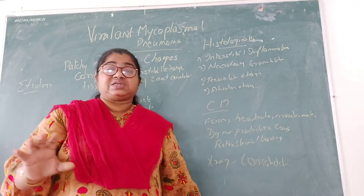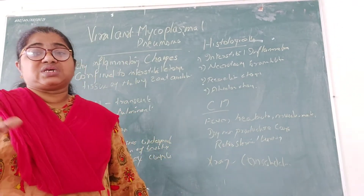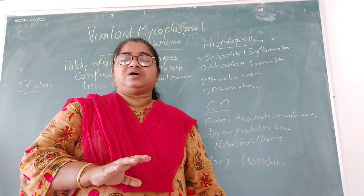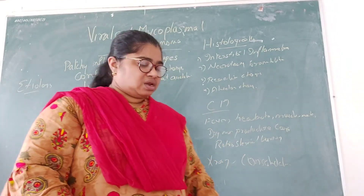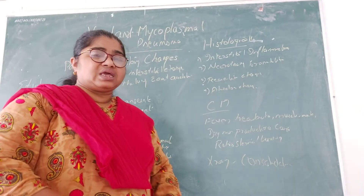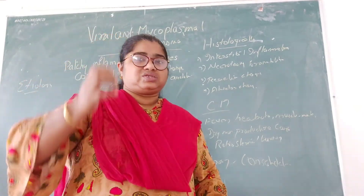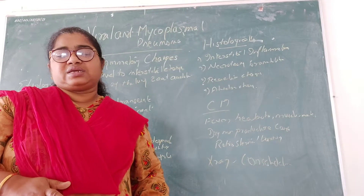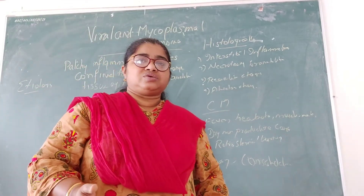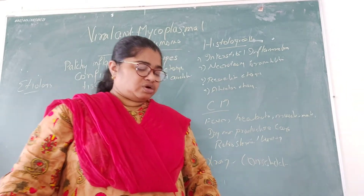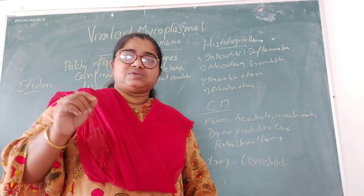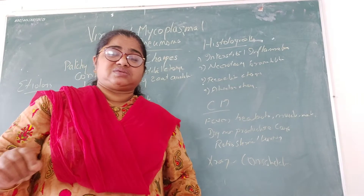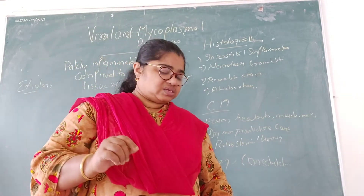There will not be any exudate — exudate is secretion with serious fluid from the interstitial part. So there won't be any exudate present in viral pneumonia. It can attack at any age: it can attack children, adults, and old people also. The seriousness of the disease varies from mild to transient and from severe to fulminant.